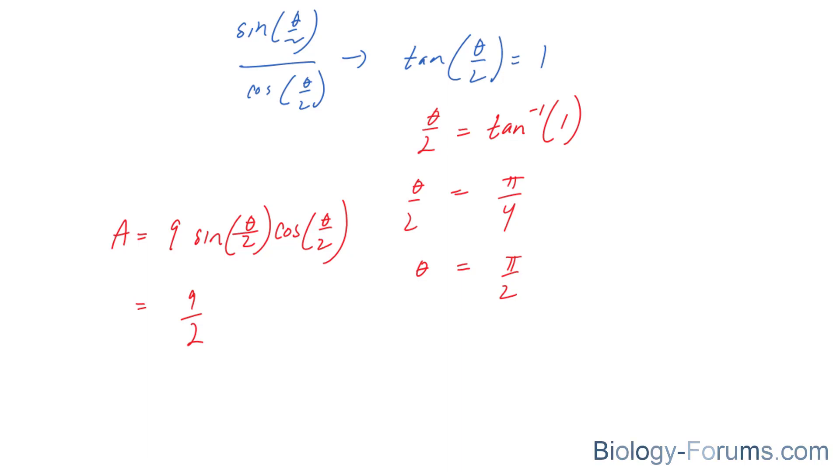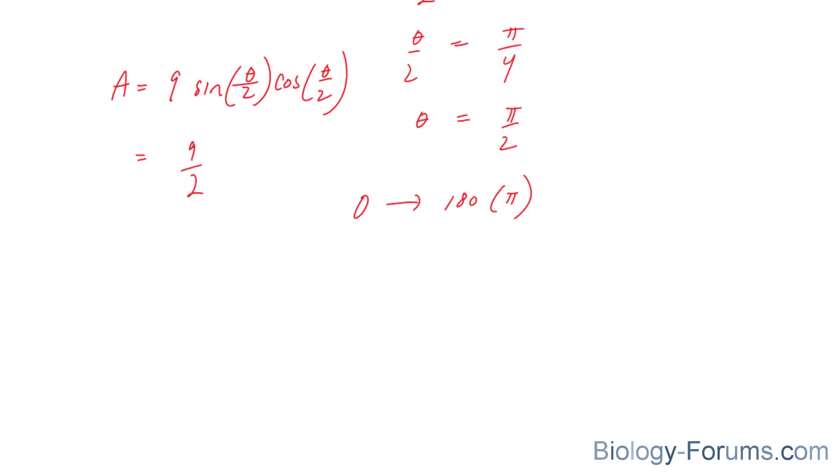Now, since a triangle ranges from 0 to 180 degrees, we can also evaluate what happens at 0 and 180 degrees, just to make sure. So let's do that just to be 100% sure.